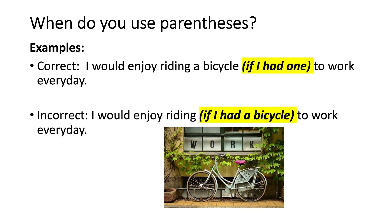Let's look at an example. 'I would enjoy riding a bicycle (if I had one) to work every day.' And then the incorrect version: 'I would enjoy riding (if I had a bicycle) to work every day.' Notice the difference — in the first sentence, 'bicycle' appears before the parentheses and makes it clear what the person would enjoy riding to work. In the second, incorrect version, if we removed 'if I had a bicycle,' the sentence wouldn't make sense. 'I would enjoy riding to work every day' — technically grammatically correct, however it's not clear.